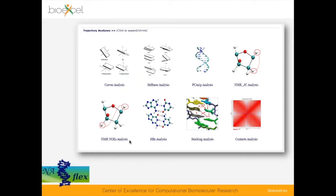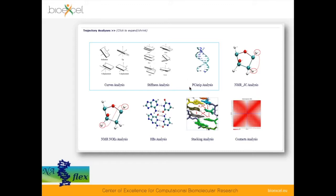I will start with the microscopic descriptors of DNA and then go to the macroscopic descriptors. The microscopic analysis involves base pair parameters, which I will explain, and Curves+ analysis — the program we use to analyze the geometry and stiffness of the DNA. We also have analysis of the principal components, the main vectors of DNA motion, and microscopic descriptors connected with NMR studies, hydrogen bond and distance analysis, and energetic analysis at the atomic level.